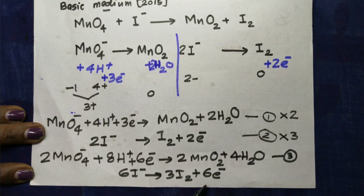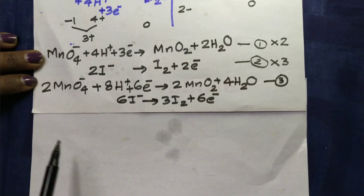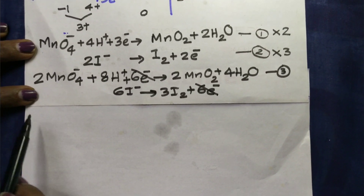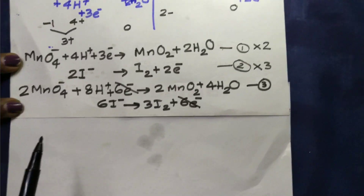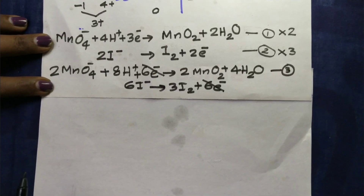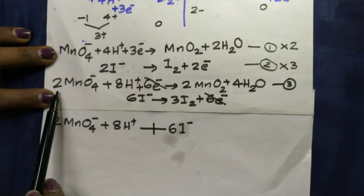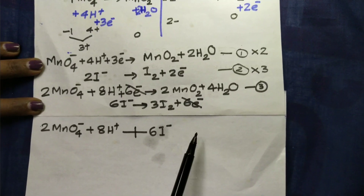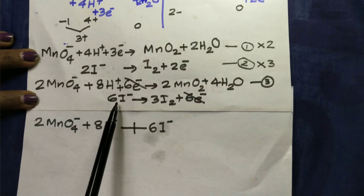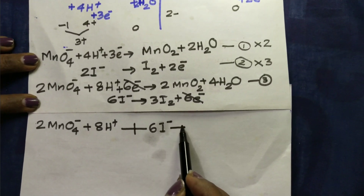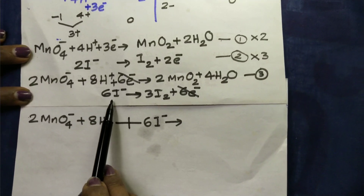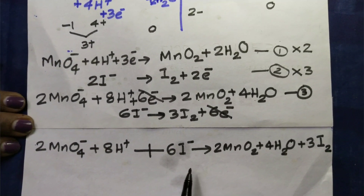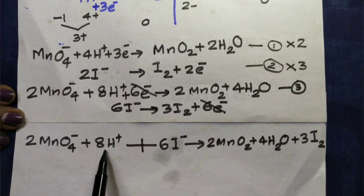We will add the two reactions together, adding 6 electrons to each power. This is the first reaction combined with the second reaction to give the overall equation. Now, you will see here — there is H⁺. So we are working in acidic medium.